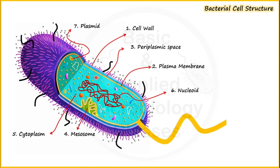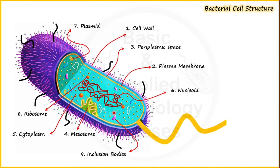We can observe these orange-colored bodies representing the presence of ribosomes. In addition to ribosomes, granular structures shown here in bluish and pinkish color represent the presence of inclusion bodies. In addition to inclusion bodies, some micro-compartments can also be observed inside the bacterial cell, shown here in white color, and these are called gas vacuoles.